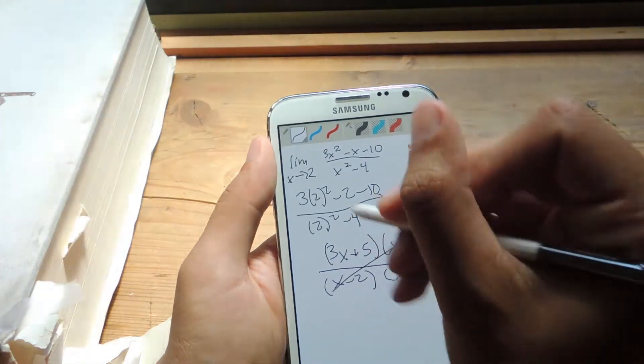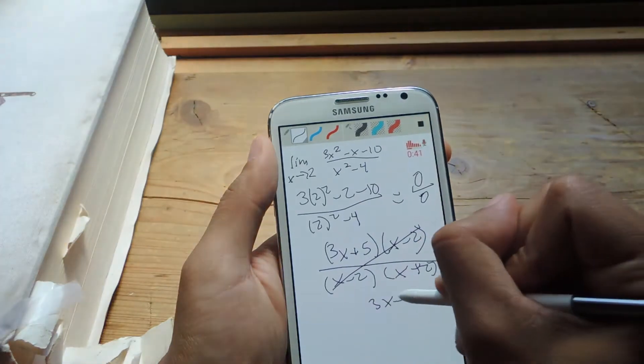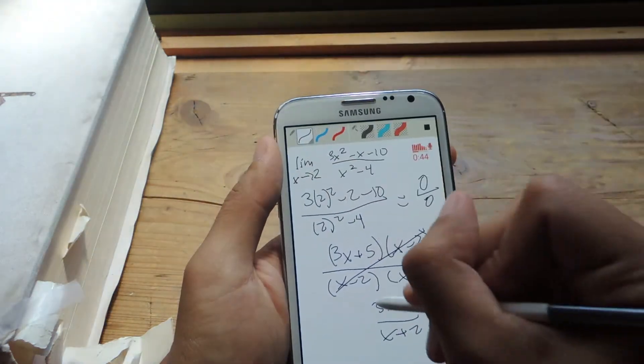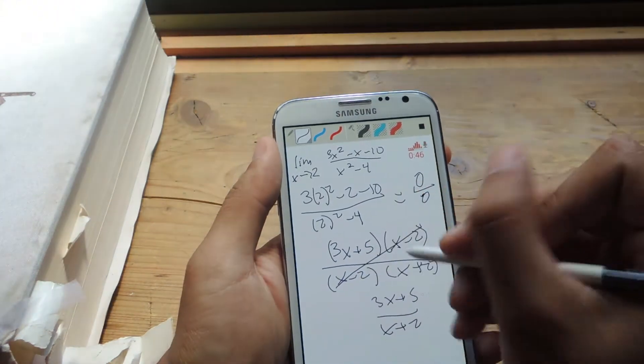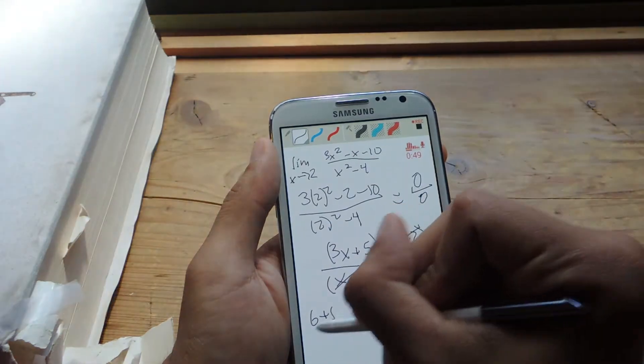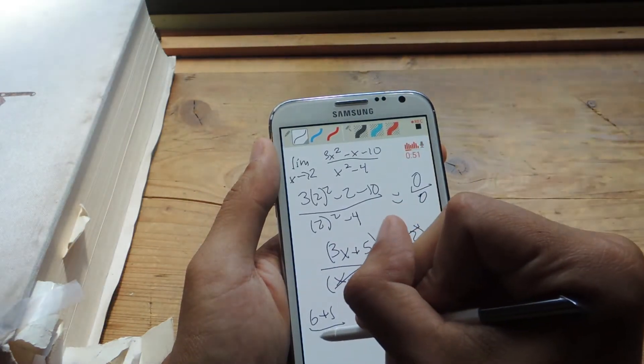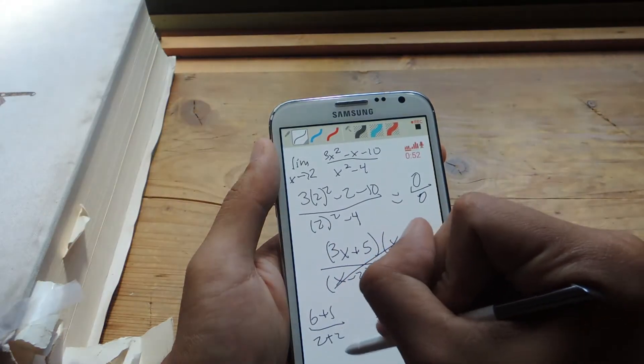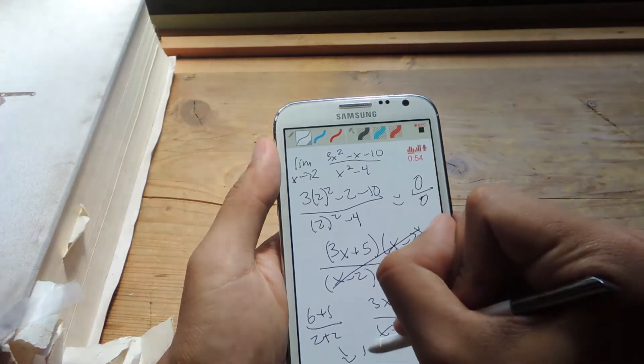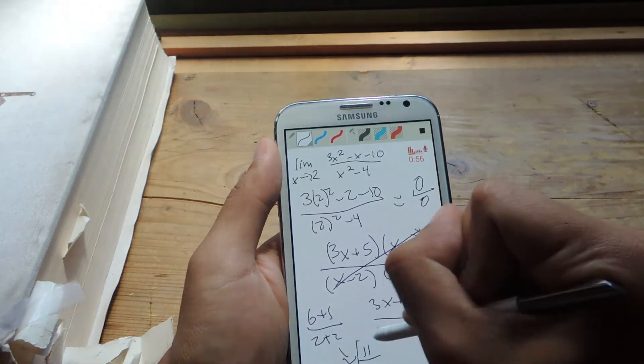So these cancel out. So you'll have 3x plus 5 over x plus 2. And you'll need to plug in the 2 now. So you'll have 6 plus 5 over 2 plus 2. And that equals 11 over 4. And that's your answer.